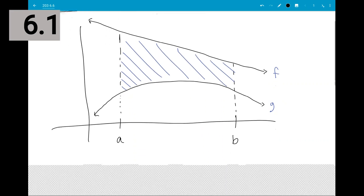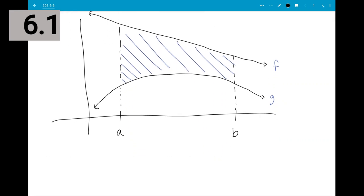Let's scroll down and get myself some more room. So area between F and G on [a, b] is equal to...